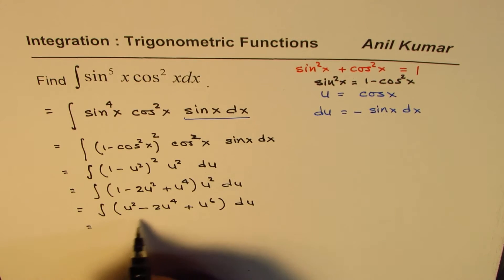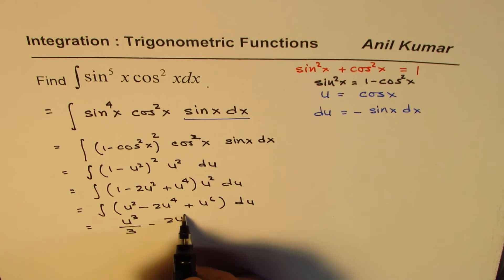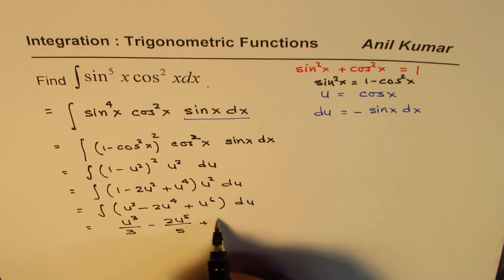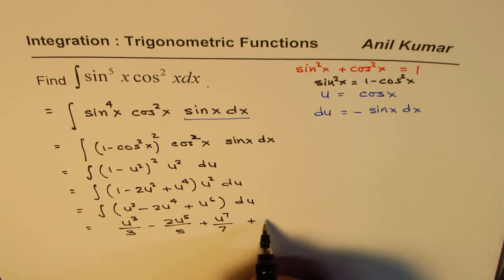And now we can do the integration part, which is u cube over 3 minus 2u to the power of 5 over 5 plus u to the power of 7 over 7 plus c.